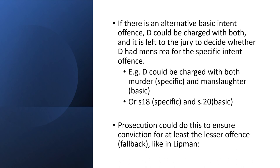If there is an alternative basic intent offence available, the defendant is normally charged with both and the jury decides whether he had mens rea for the specific or basic intent offence. In Sheehan and Moore, the defendant could be charged with both murder and manslaughter: if the intent to kill or cause GBH cannot be proved, manslaughter is the fallback because it can be done recklessly. Section 18 similarly has section 20 as a fallback. However, not every offence has a fallback — intoxication plus theft, where the defendant cannot form the mens rea, leaves no fallback offence and they would simply be not guilty.